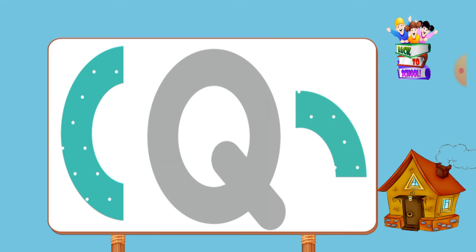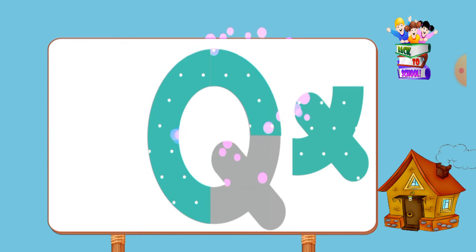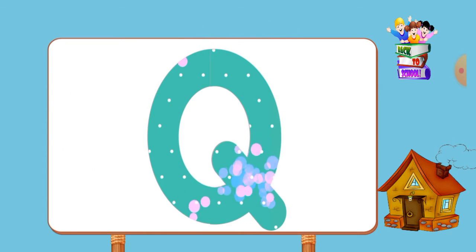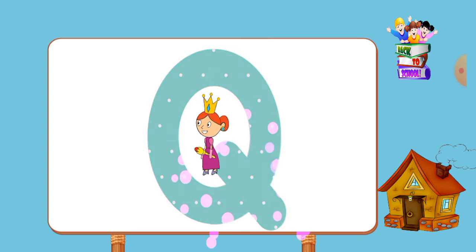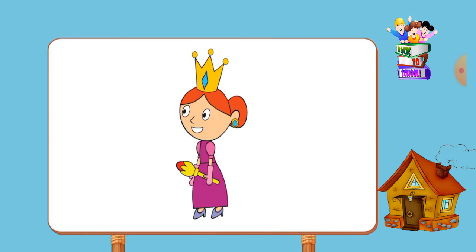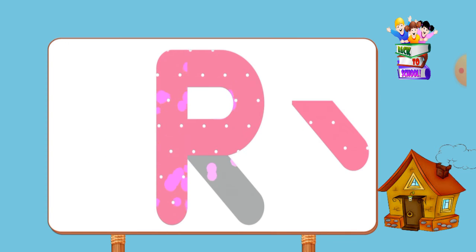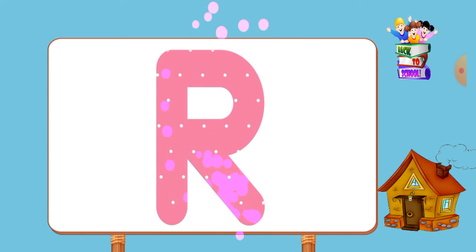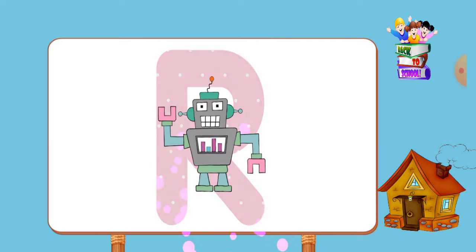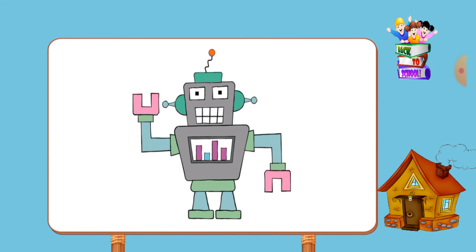Match the pictures to their shadows. Q, qu, queen. Match the pictures to their shadows. R, r, robot.